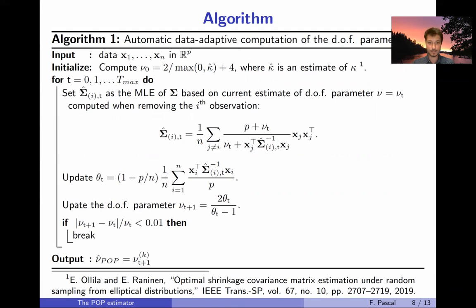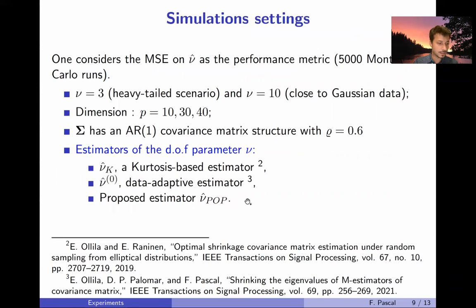So let's move to some experiments to assess and see the performance. Of course one considers the mean square error on nu hat as performance metric. We have run 5,000 Monte Carlo runs and we have analyzed these two scenarios. The first one is the case where nu is equal to 3, so small value of nu meaning very heavy-tailed data. And a second case nu equal 10, quite close to Gaussian data. Then several dimensions have been tested, 10, 30, 40.